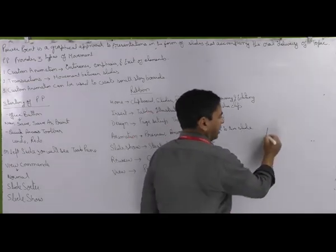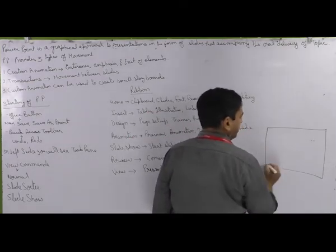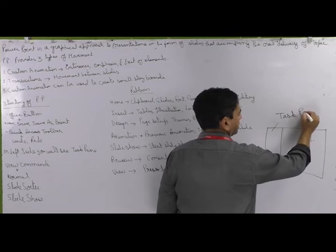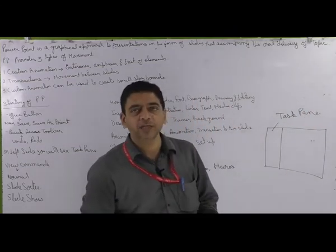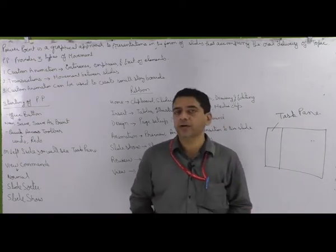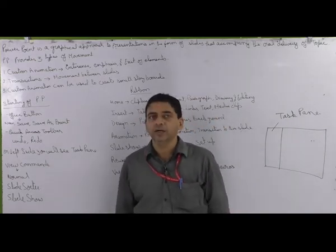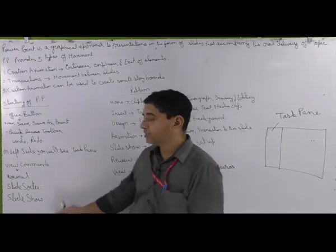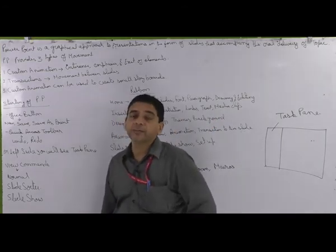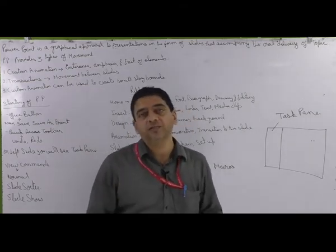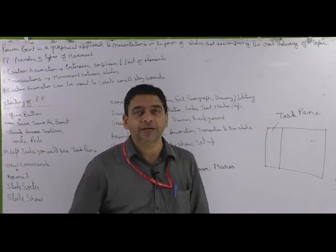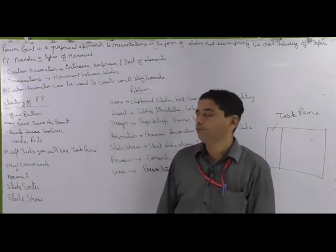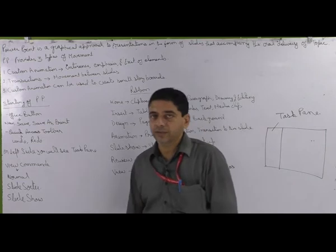Let me draw and show you. This portion is known as the task pane. The task pane is used to view slides. In Normal view, you see one slide. In Slide Sorter, you see all slides. In Slide Show, it shows how the presentation will look whenever you execute your slides. These are the three view commands of PowerPoint.